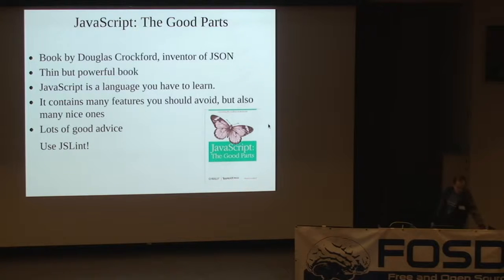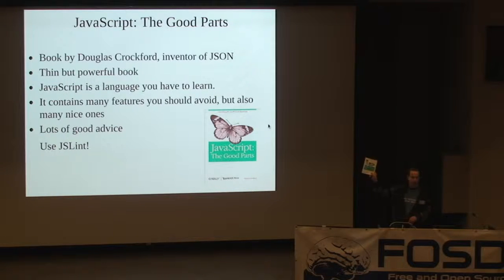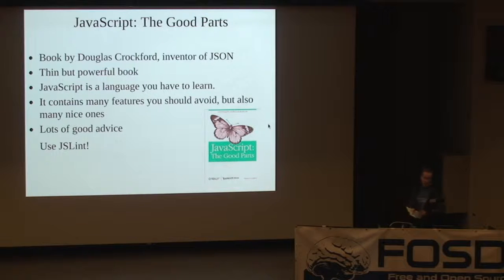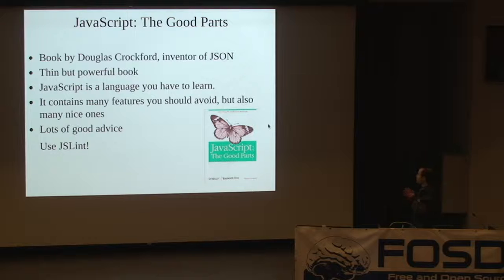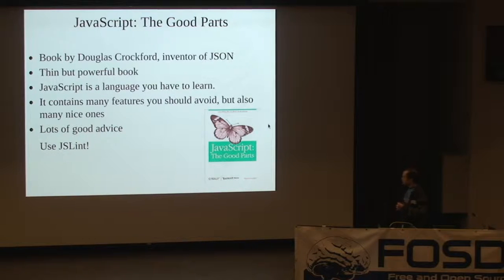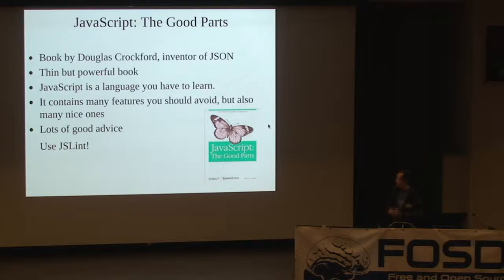There's a book by O'Reilly called 'JavaScript: The Good Parts' — it explains which parts of JavaScript are bad and which you should avoid. It's a very thin book and a great read. The author also wrote a program called JSLint, which tells you if you're using a bad part of JavaScript so you can avoid it.